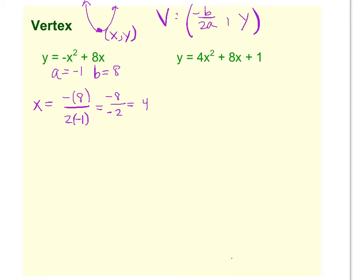Now to get the y value, all you have to do is take that 4 and plug it back into the original equation. So the original equation, y equals, it's a negative parenthesis, and I'm going to plug in a 4 for the x, 4 squared, plus 8 times 4.